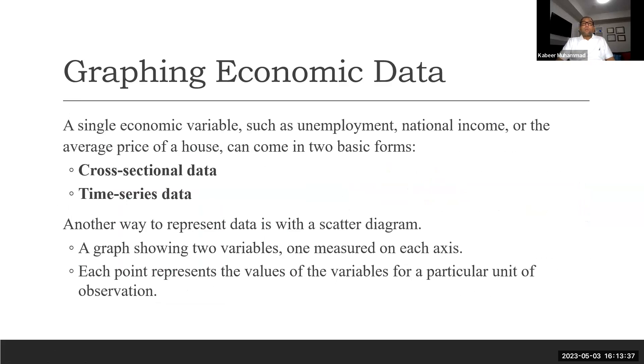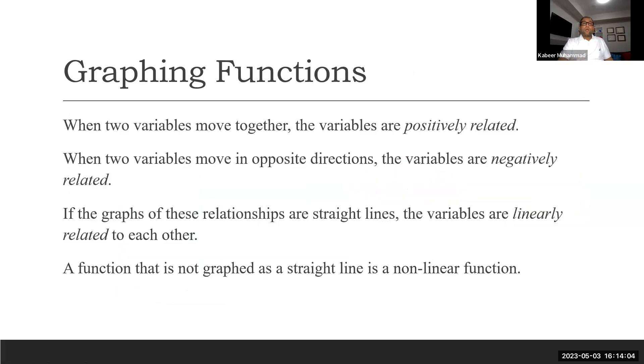Single economic variables such as unemployment, national income, or the average price of a house can come in two basic forms: cross sectional data and time series. Another way to represent data is with a scatter diagram, a graph showing two variables, one measured on the x-axis and the other on the y-axis. Each point represents the value of a variable for a particular unit of observation.